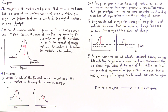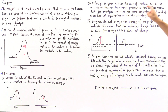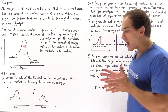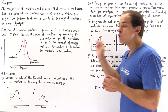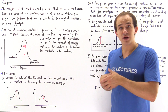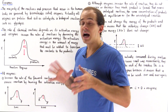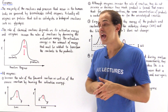Although enzymes increase the rate of reaction, they do not increase or decrease how much product is actually formed. For catalyzed reactions, the same concentration of products is reached at equilibrium as for the uncatalyzed reaction. What the enzyme does is decrease the time at which we reach equilibrium, but the concentration of reactants and products is exactly the same at equilibrium.